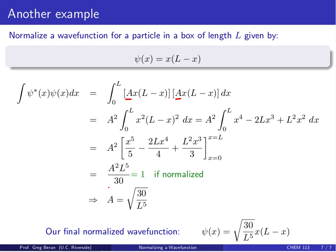If this is normalized, that quantity should equal 1. So we can solve for A, and what we find is that A = √(30/L⁵). Our normalized wave function is ψ(x) = √(30/L⁵) · x(L - x).